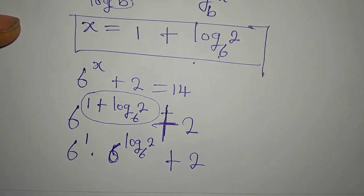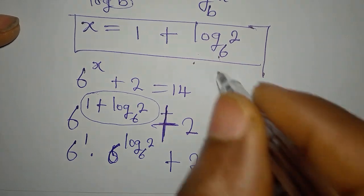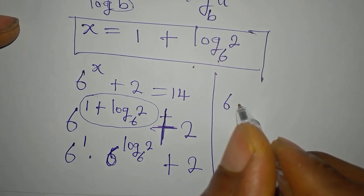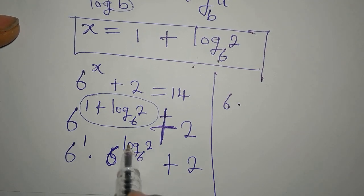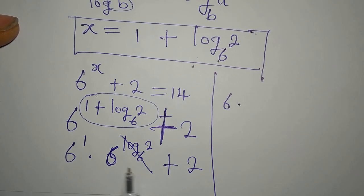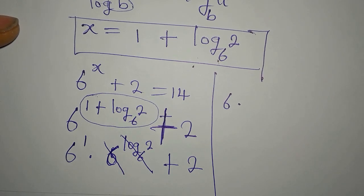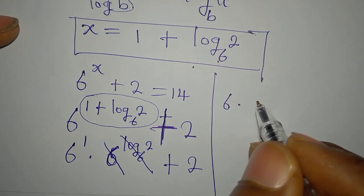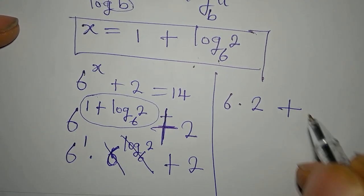Now remember that 6 to the power of 1 is still giving us 6. Log to base 6 and this base can cancel, so we multiply this by 2. So we have 6 times 2, then plus this 2.